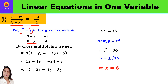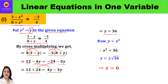Now we solve by cross multiplication: 4(3 - y) = -3(8 + y). Opening the brackets: 12 - 4y = -24 - 3y. Taking like terms to one side: 12 + 24 = -3y + 4y, which gives us 36 = y. So y = 36.